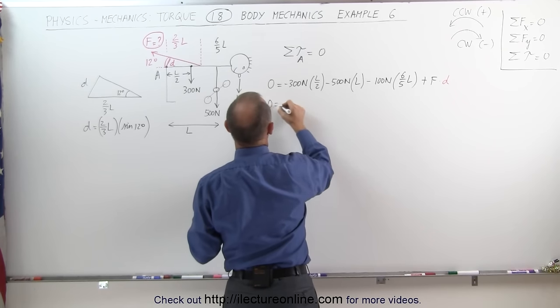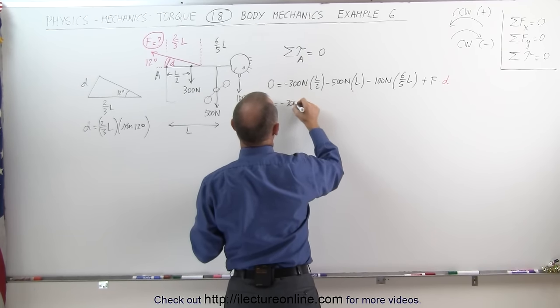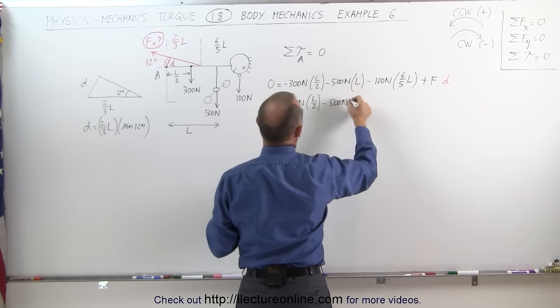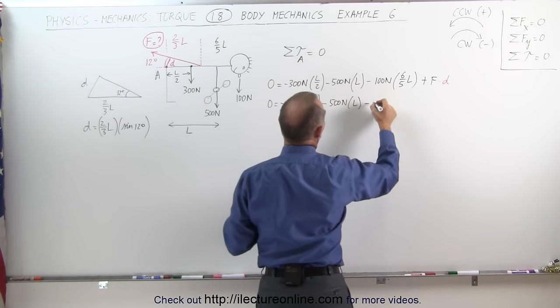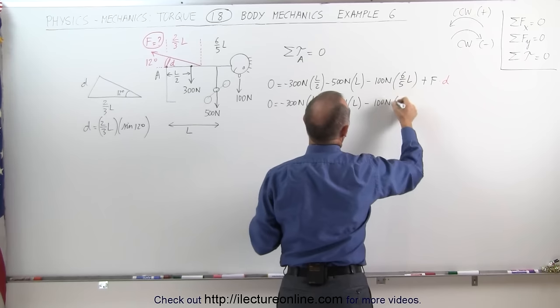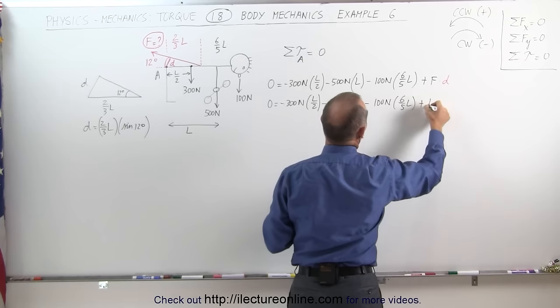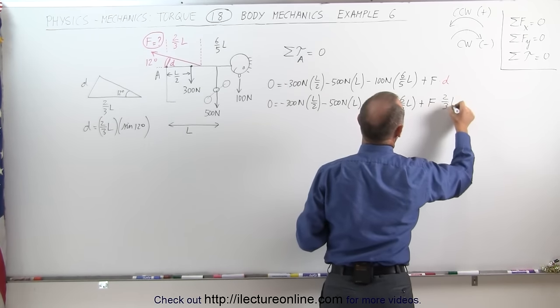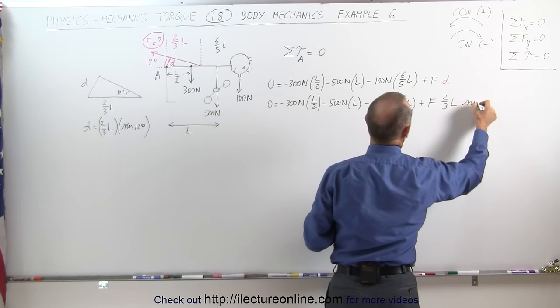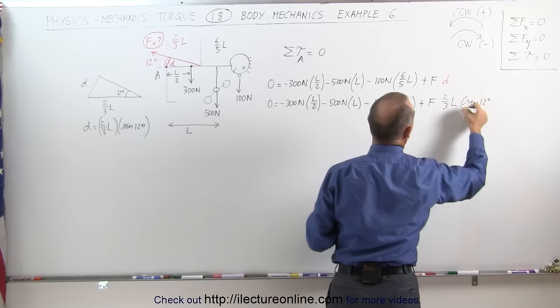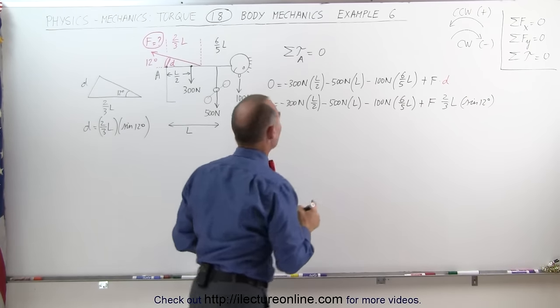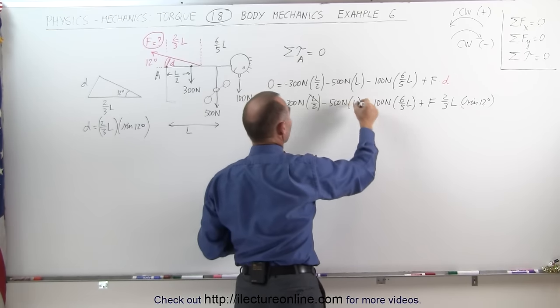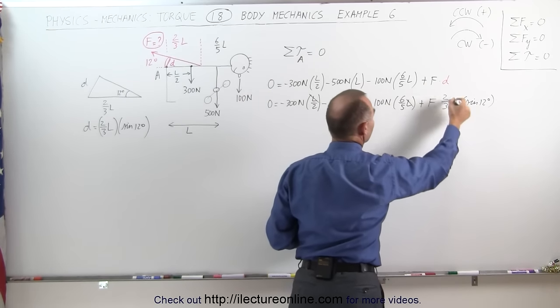We have zero equals minus 300 newtons times L over 2 minus 500 newtons times L minus 100 newtons times 6 over 5 L plus F times D, and D is two-thirds L times the sine of 12 degrees. Since this is all set equal to zero, and every term has an L in it, the L cancels out. So we can get rid of the L here, the L there, the L here, and the L there.